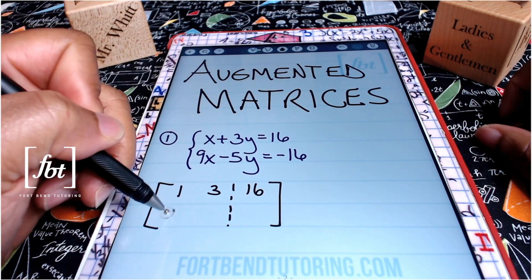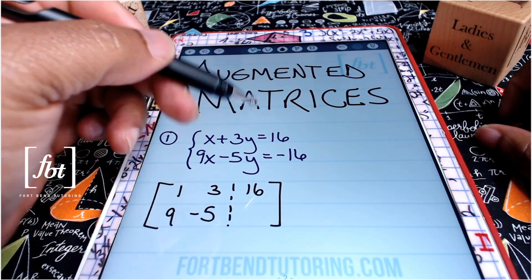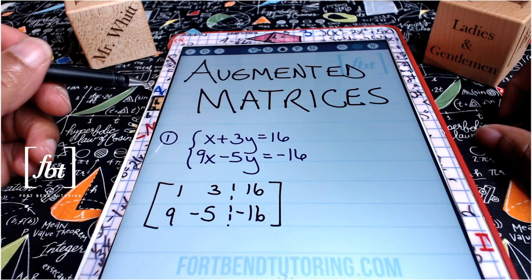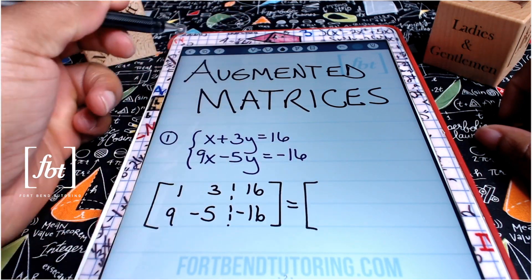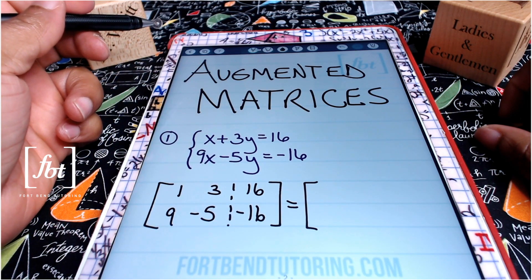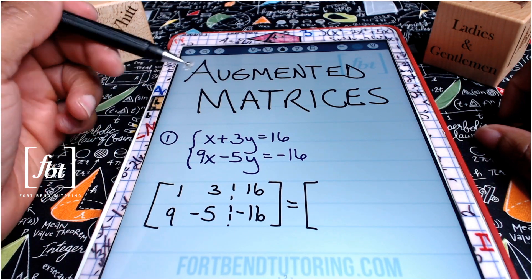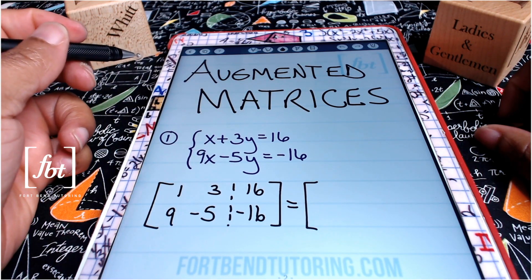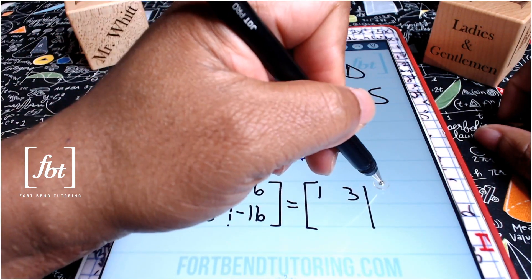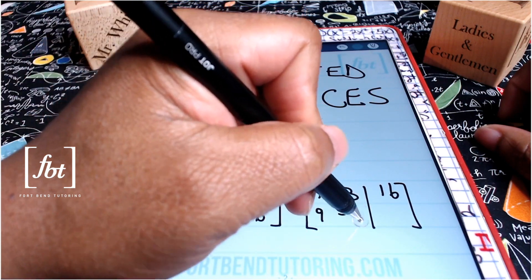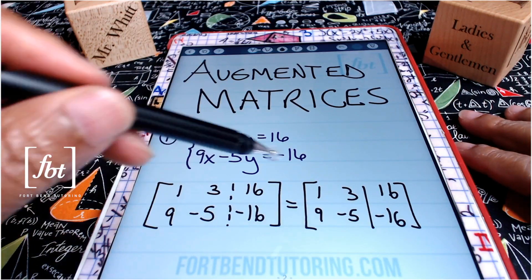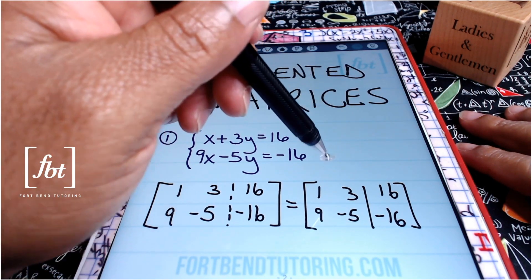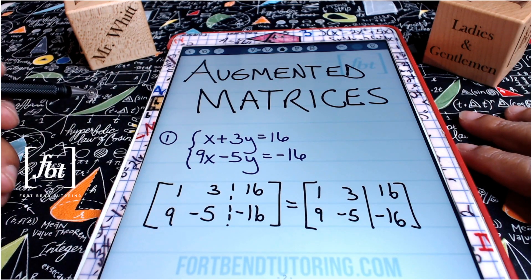In the second equation, I'll take the nine, I'll take the negative five, and then on the right side of the equation I'm bringing down that negative 16. This is how many textbooks will write the augmented matrix for this linear system of equations. However, I tend to use a solid line instead of a dashed line, and some textbooks use that same notation. So you'll see me write the augmented matrix with one, three, a solid line, and 16, as well as nine, negative five, and negative 16. Both notations are correct.